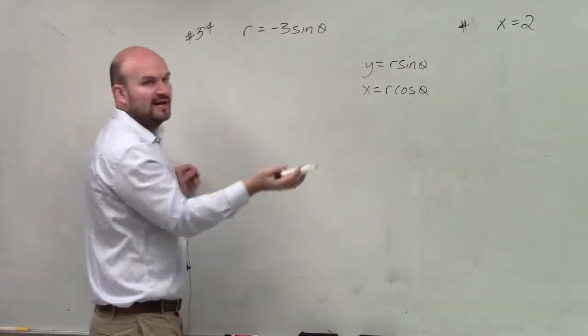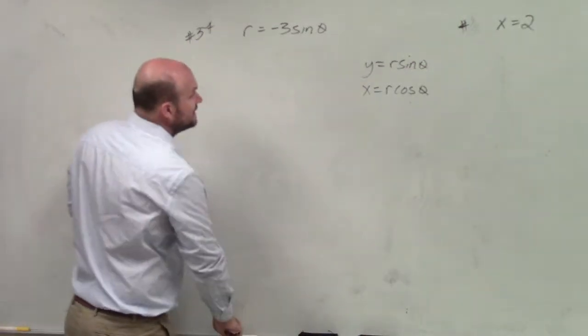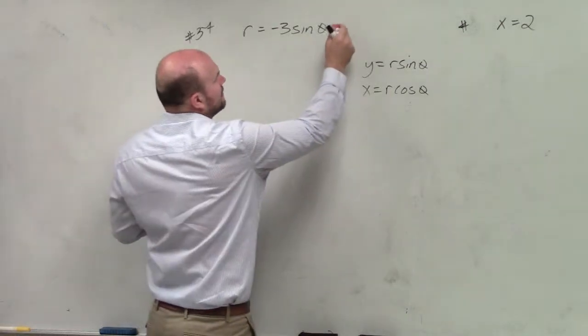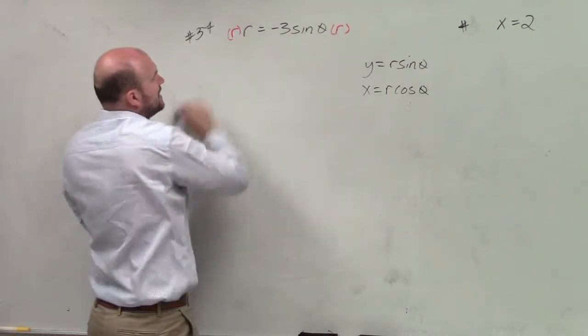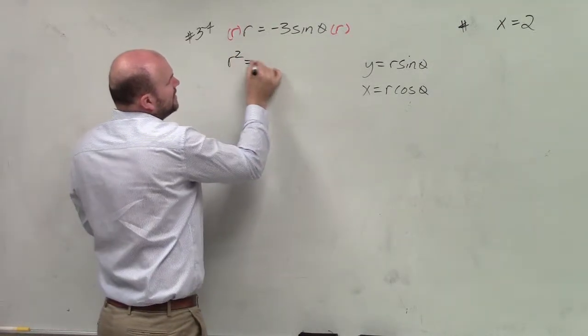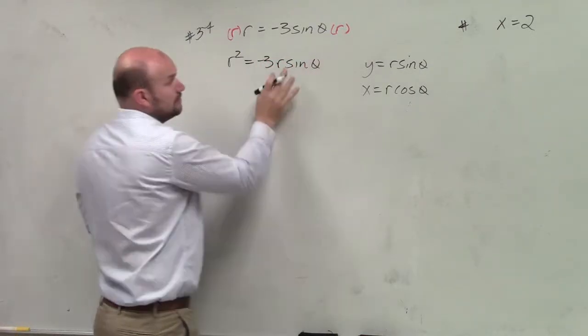Well, you just can't multiply an r on one side. Whatever you do on one side, you have to do on the other side. So I multiply an r on both sides. And what I obtain is r squared equals negative 3r sine of theta.